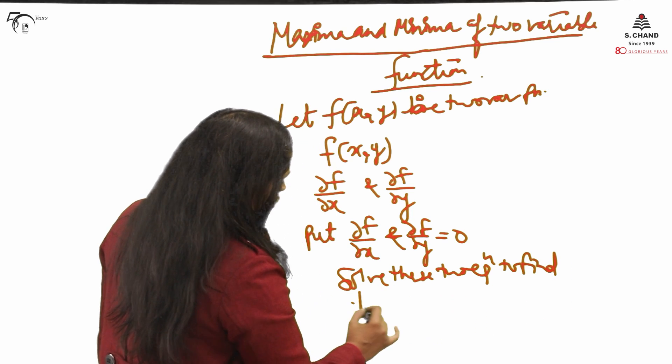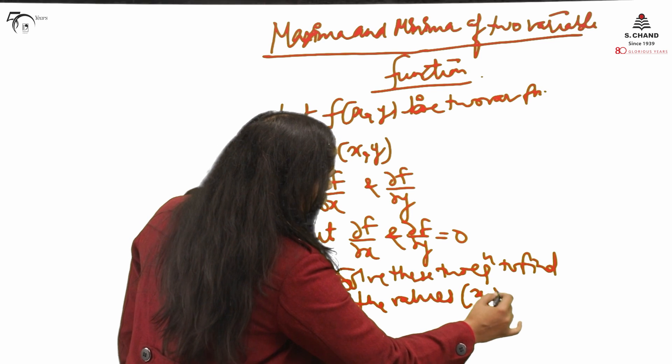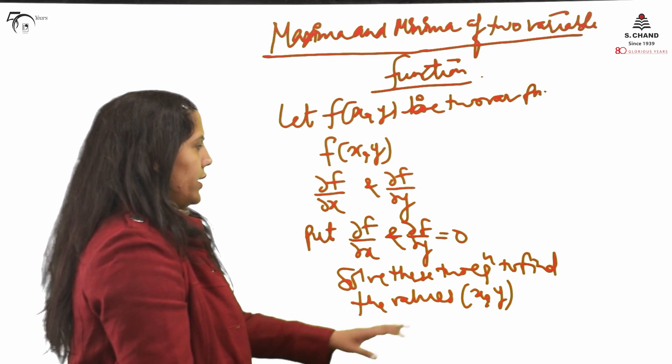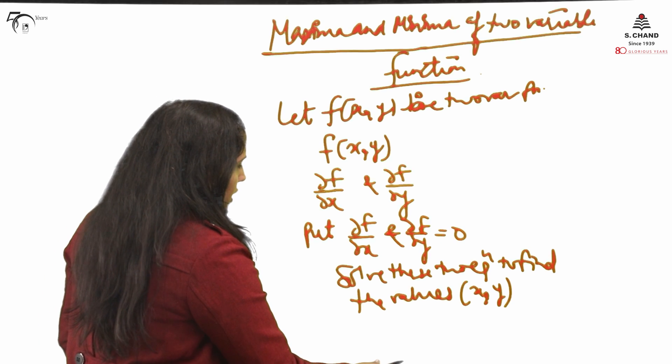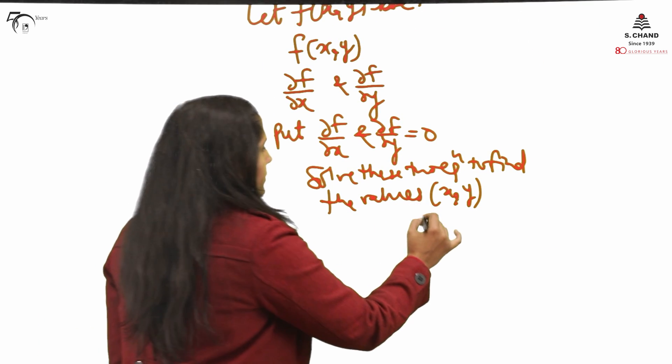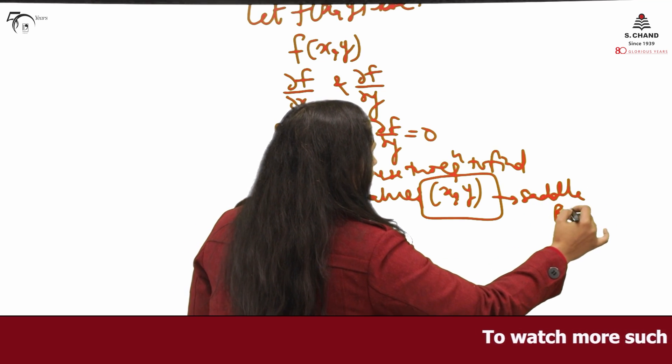Some x,y values you will be getting when you will solve these two equations. These values are called saddle points or critical points, the points where you discuss maxima minima.